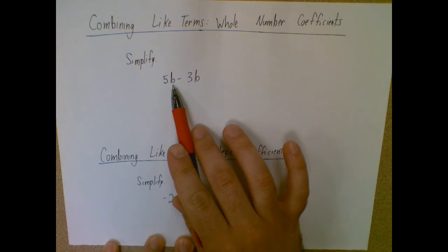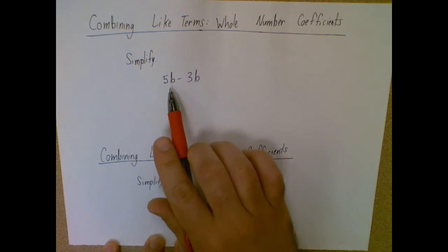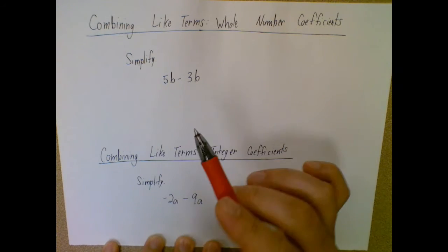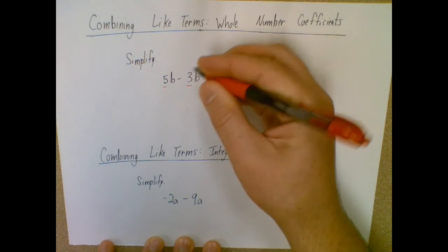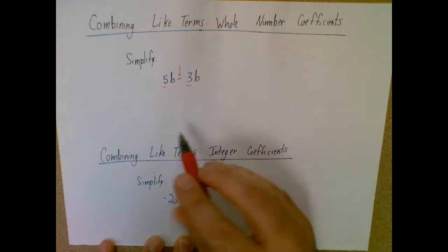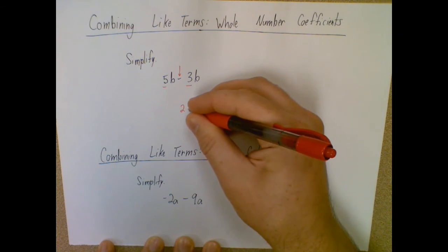We want to first make sure they are like terms so they have the same variables or the same number of variables. In this case, they both have a single b as their variable, so they are like terms, in which case I'm just going to look at their coefficients then and use that operation. So I'm just going to do 5 minus 3, which I'm sure you know is 2.